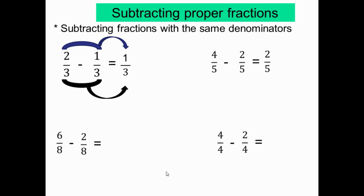Exercice suivant: 6 sur 8 moins 2 sur 8. Encore, même dénominateur. Les deux fractions ont le même dénominateur, donc on soustrait les numérateurs: 6 moins 2 égal 4. On obtient 4 sur 8. Il faut simplifier: on divise par 4. 4 divisé par 4 égal 1, 8 divisé par 4 égal 2. La réponse est 1 demi. Exercice suivant: 4 sur 4 moins 2 sur 4 — même dénominateur. 4 moins 2 égal 2. On obtient 2 sur 4.